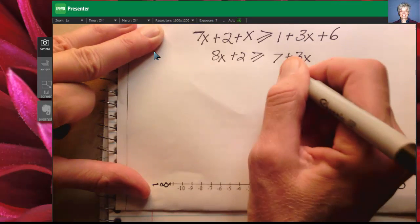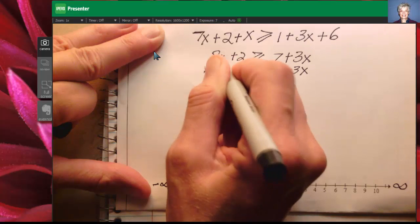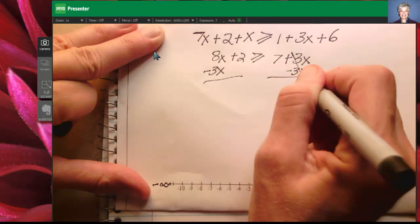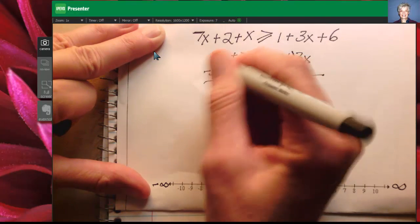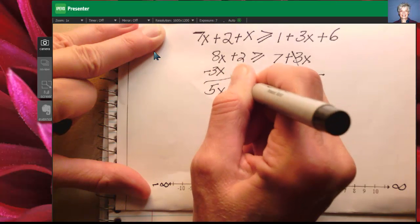Alright, so I'm going to subtract 3x from both sides of the inequality just like I would an equation. Leaves me with 7 on the right and 8x minus 3x is 5x and I bring down the 2.